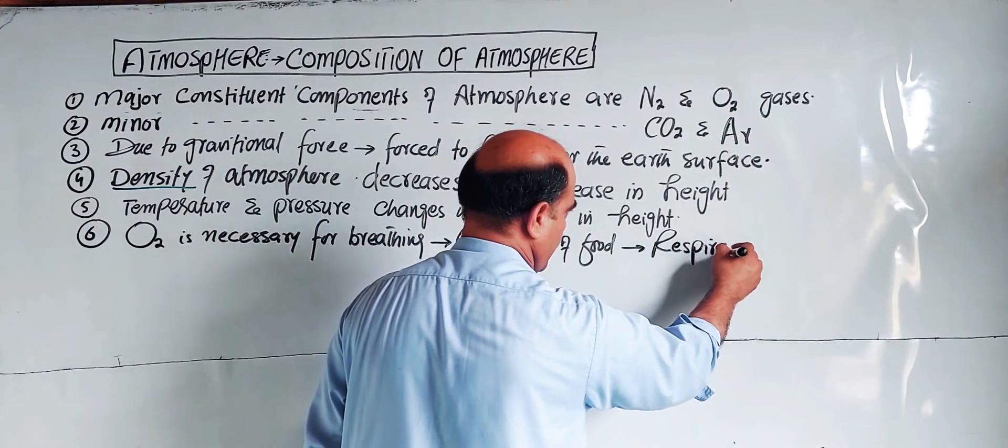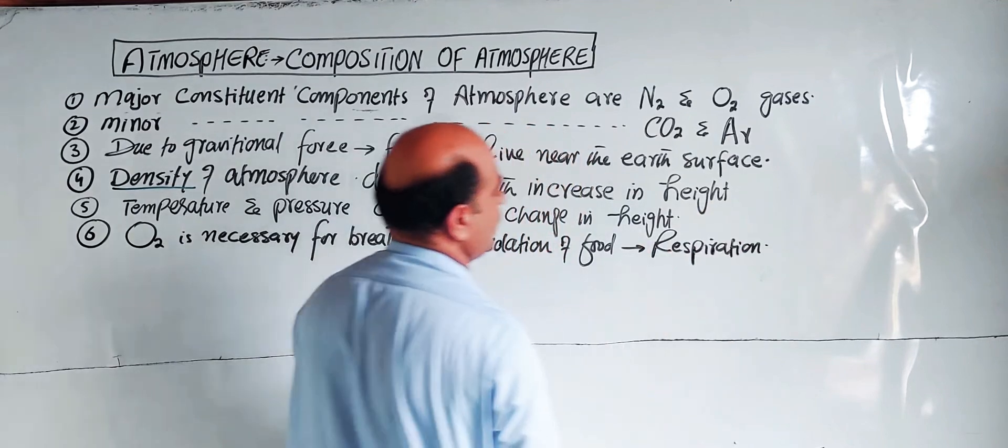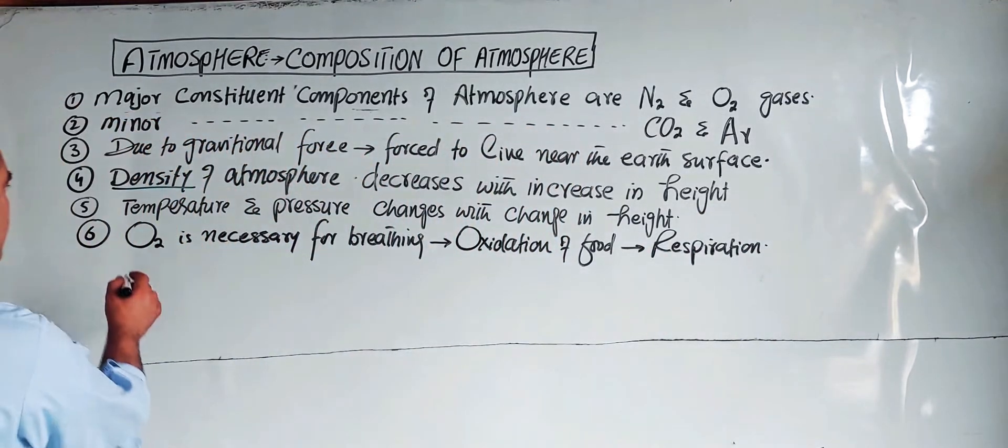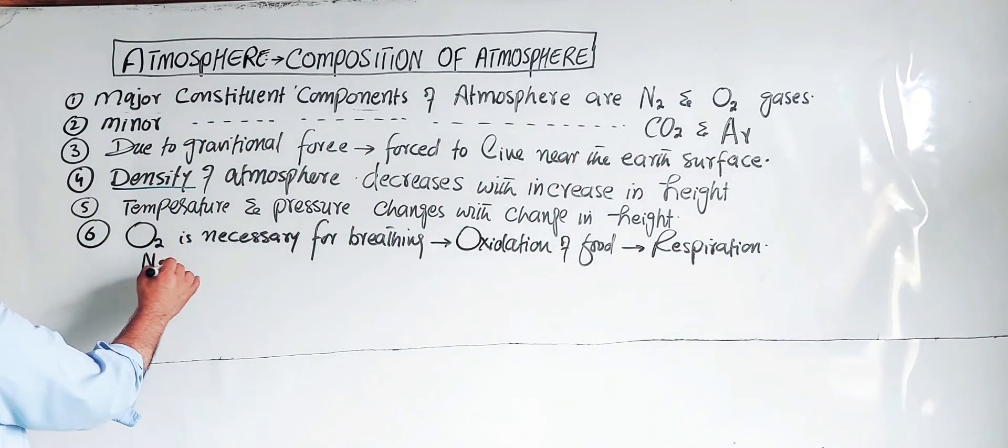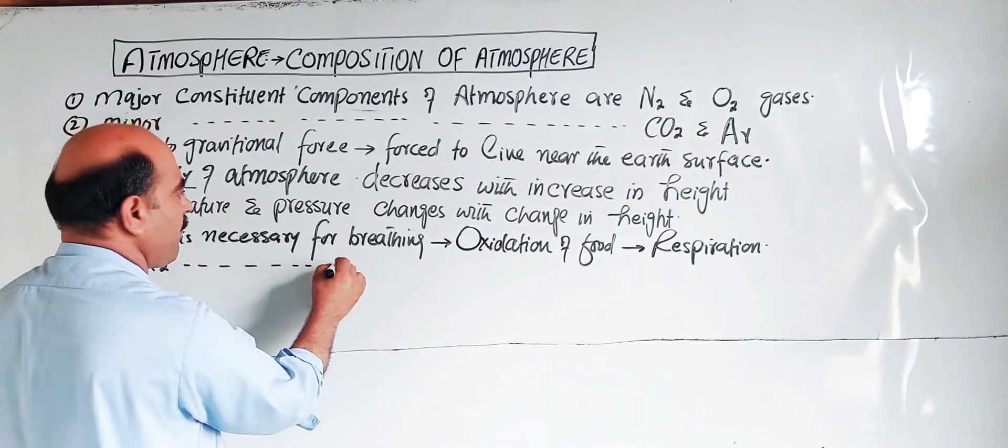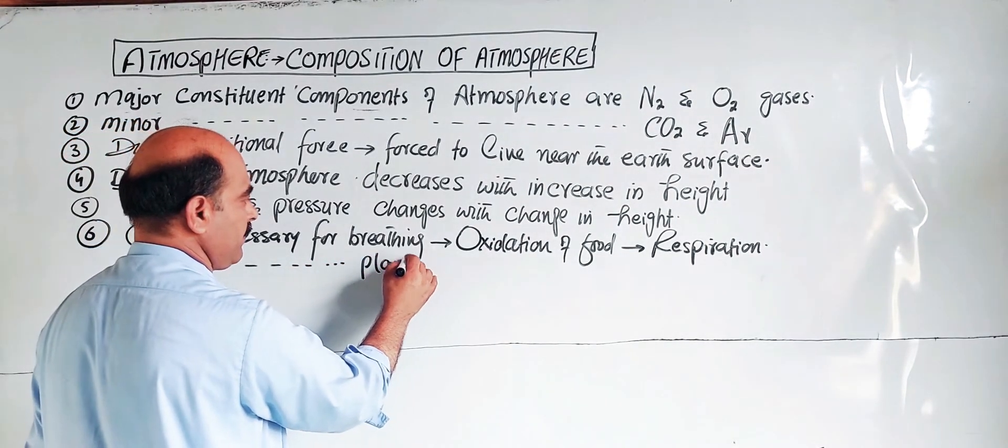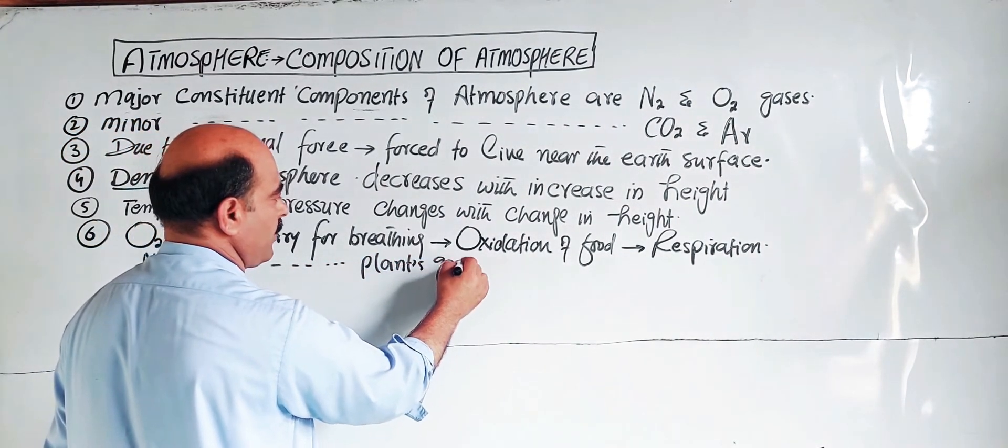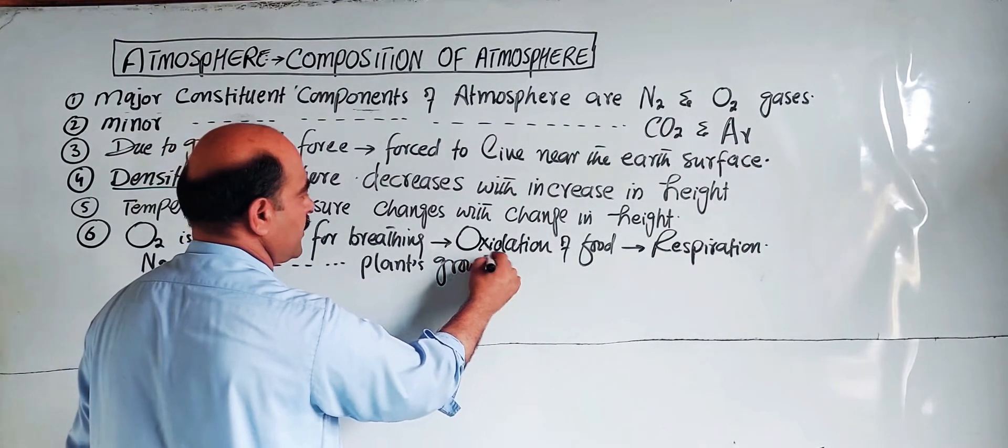Next, nitrogen. Nitrogen is necessary for plants growth. Atmospheric nitrogen is converted into nitrates for plants.